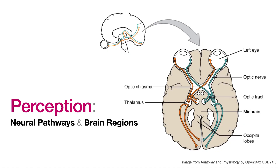Let's take a look at how the brain receives and processes sensory information from the environment. To get started, let's take a look at regions of the brain and the functions they provide.